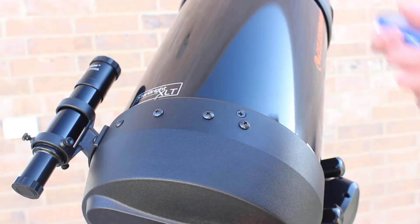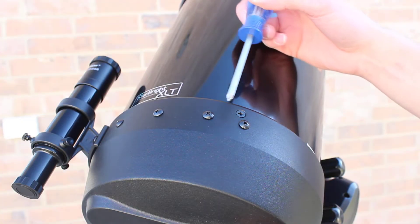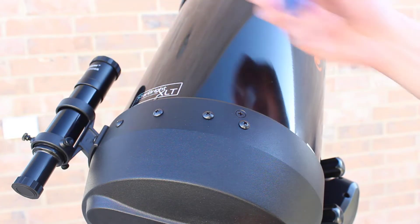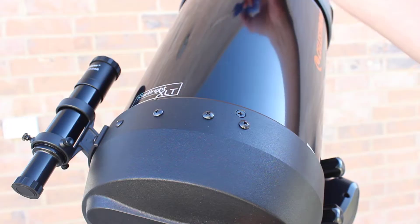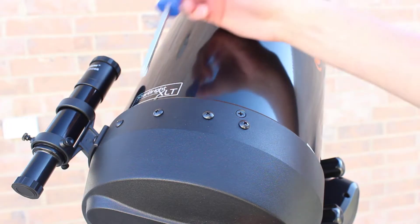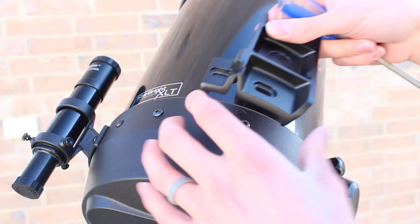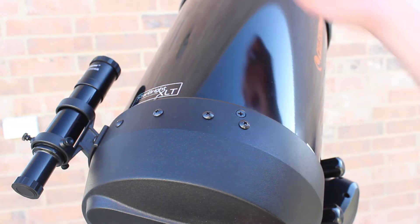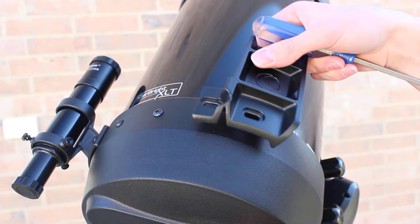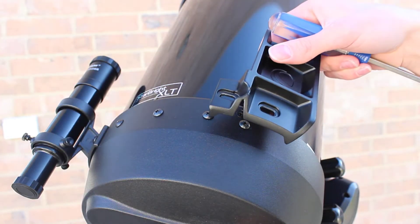Schmidt-Cassegrain telescopes typically have two spots to mount accessories. One where your finder scope is and the other off to the right. This middle spot is for another rail if you want to mount a rail on top. I'm going to put my StarSense bracket right here, and I don't really see a need to have a finder scope if you're going to be using StarSense, so I'm actually going to remove my finder scope too.